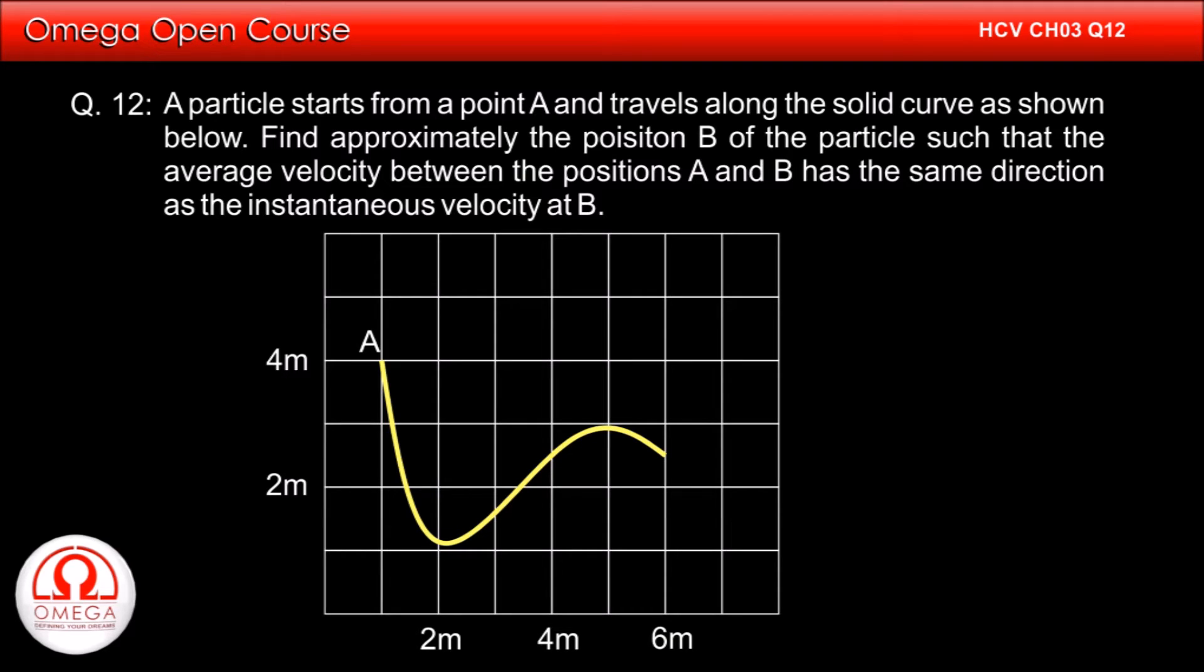A particle starts from a point A and travels along the solid curve as shown below. Find approximately the position B of the particle such that the average velocity between positions A and B has the same direction as instantaneous velocity at B.